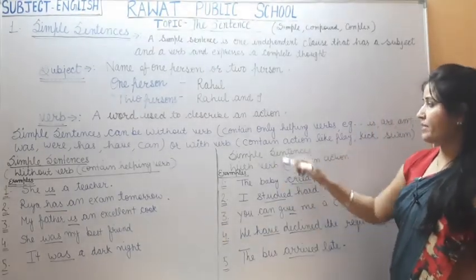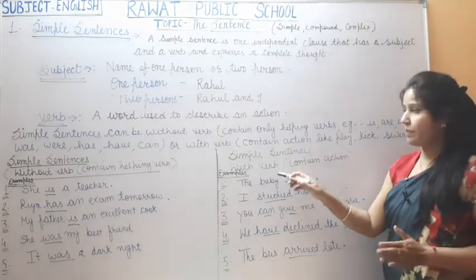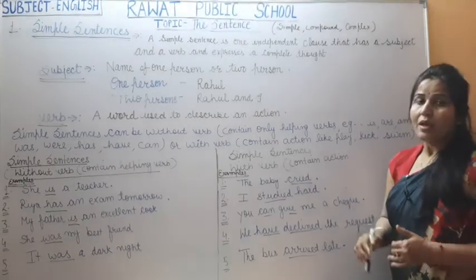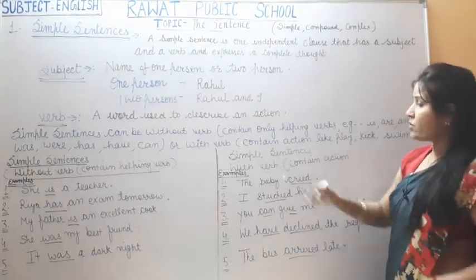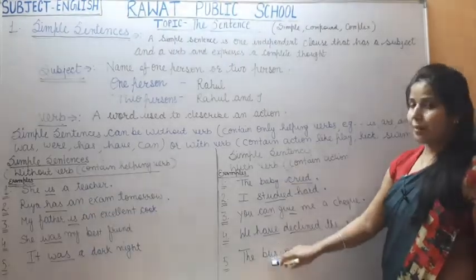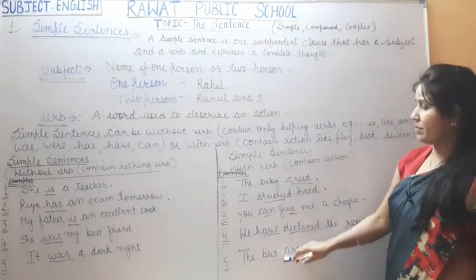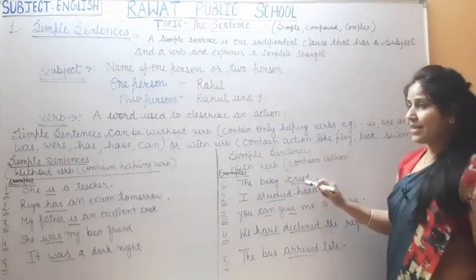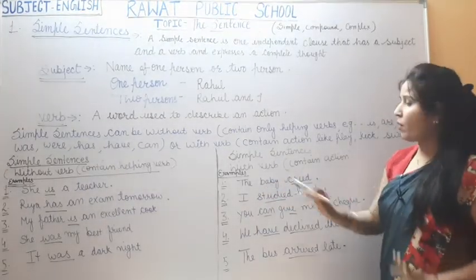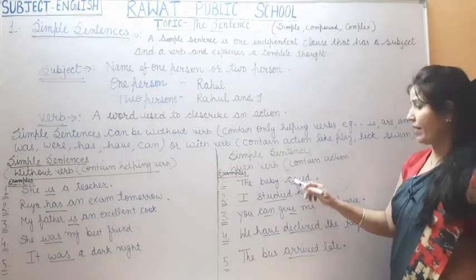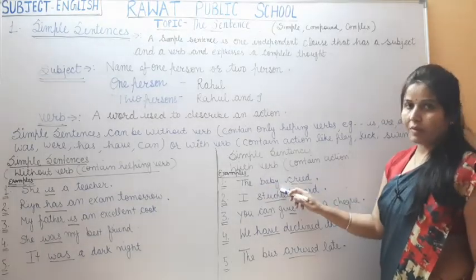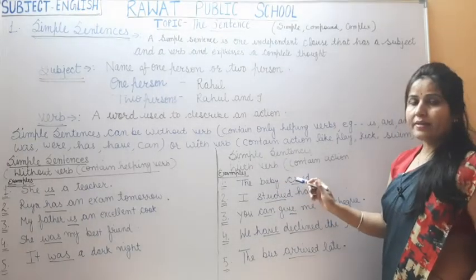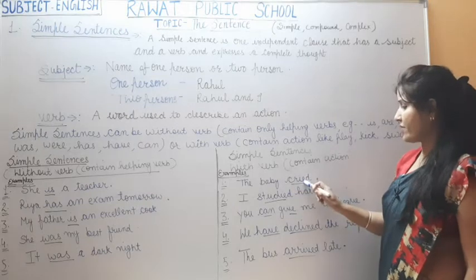Now I will explain simple sentences with verb — examples that use a main action verb. First sentence: 'The baby cried.' In this sentence there is no helping verb. Only the verb 'cried' is written here — this is a main verb, an action verb.